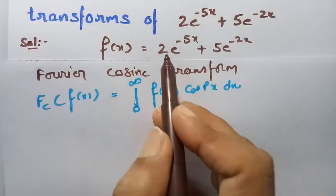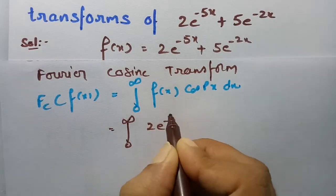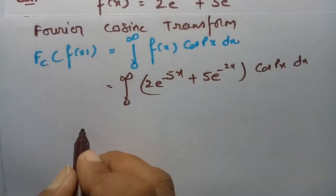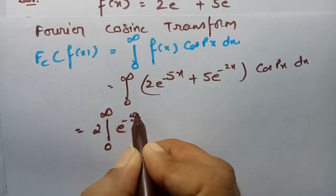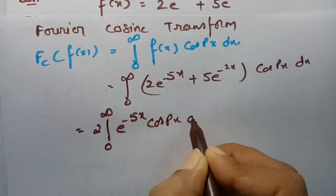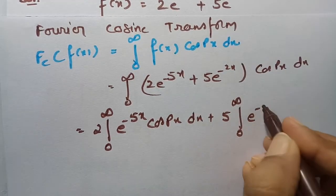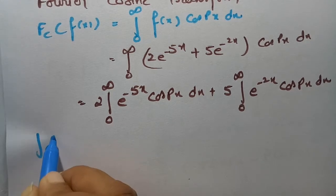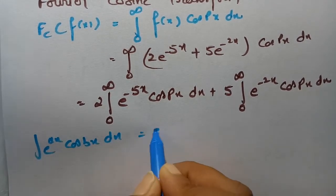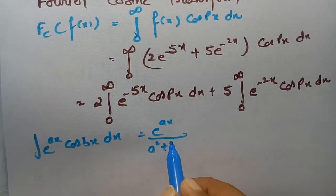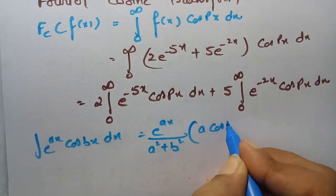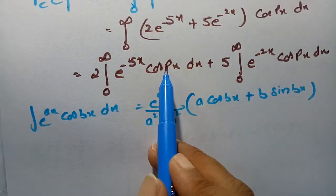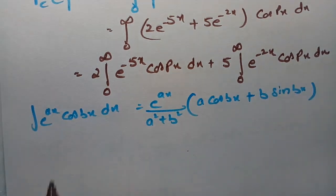Here f of x is 2 into e power minus 5x plus 5 into e power minus 2x, so the integral becomes 0 to infinity of 2 into e power minus 5x plus 5 into e power minus 2x into cos px dx. Splitting: 2 times integral 0 to infinity of e power minus 5x into cos px dx, plus 5 times integral 0 to infinity of e power minus 2x into cos px dx. The formula for integral of e power minus ax cos bx dx equals e power minus ax divided by a squared plus b squared, times a cos bx plus b sin bx. For the first term a is minus 5, b is p; for the second term a is minus 2, b is p.